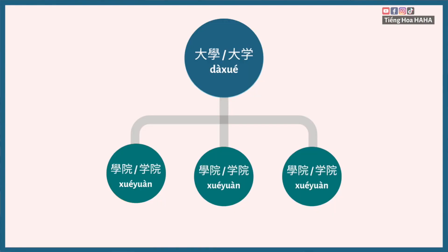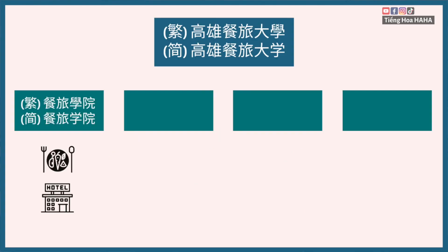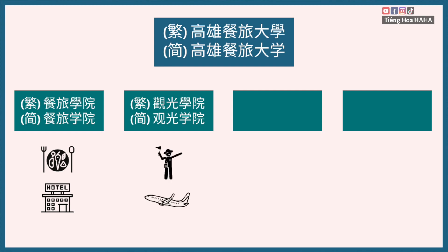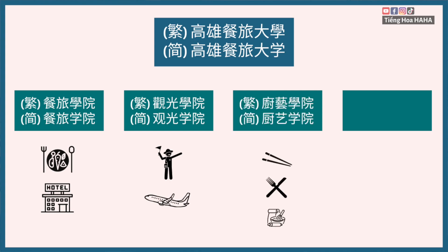大學通常會分成幾個學院。例如我的母校就分成：餐旅學院，裡面有餐飲管理、旅館系等等；觀光學院，裡面有旅運管理系、航空系等等；廚藝學院，包含中餐、西餐、烘焙等等；以及國際學院，包含國際觀光學士學程等等。